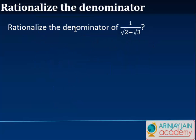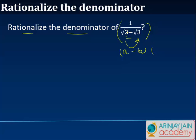So the rationalization of 1 by root 8 is actually equal to root 8 divided by 8. Now let's look at another example: rationalize the denominator of 1 by root 2 minus root 3. This is of the form a minus b. So in order to rationalize this — in order to make these square roots a rational number — I can multiply it by a plus b, because we know that (a minus b)(a plus b) gives me a squared minus b squared. And the moment I square these two numbers, I will get a rational number.